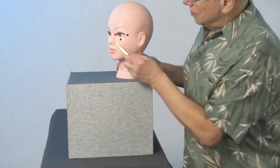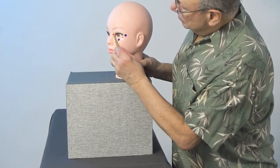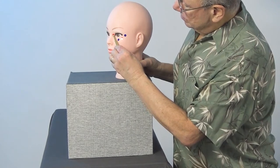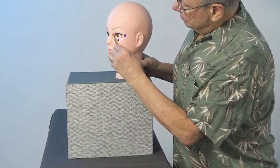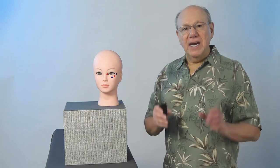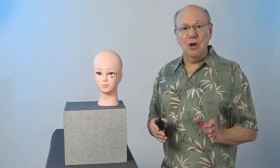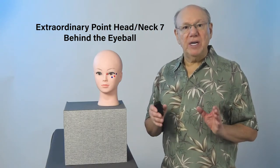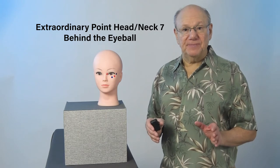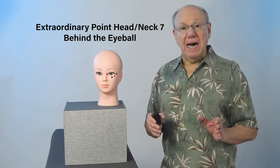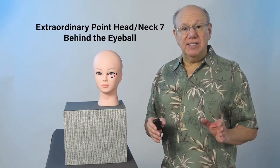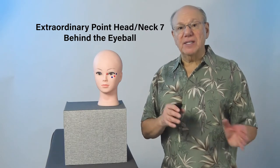And here's another view. The next research-tested point for glaucoma is Extraordinary Point Head-Neck 7. This is also known as Behind the Eyeball because it is said to affect the eye from the front to the back.